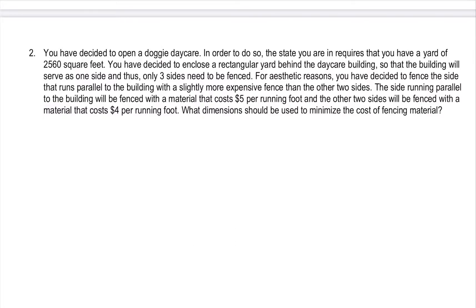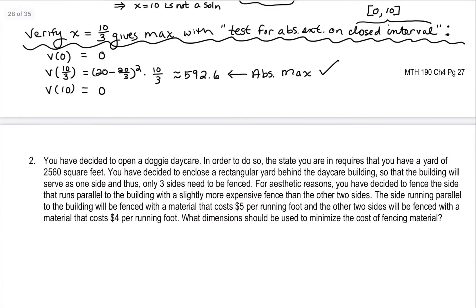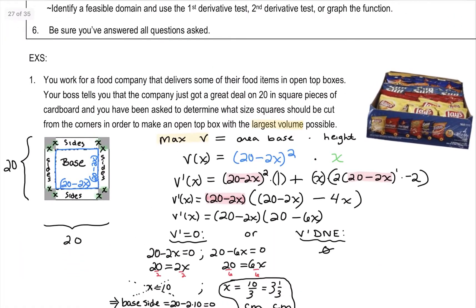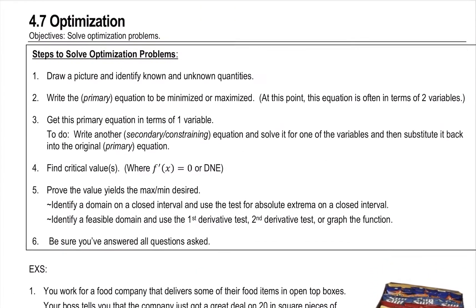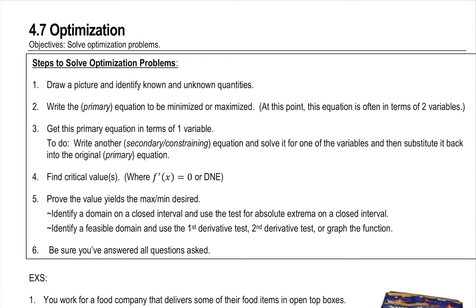So we're going to continue looking at some optimization problems. We did one last time that didn't require us to do anything special in terms of getting the function in terms of one variable. This time we're going to have to, and for most of the problems, maybe work a little bit harder, and it's going to involve this process that's laid out in steps two and three.